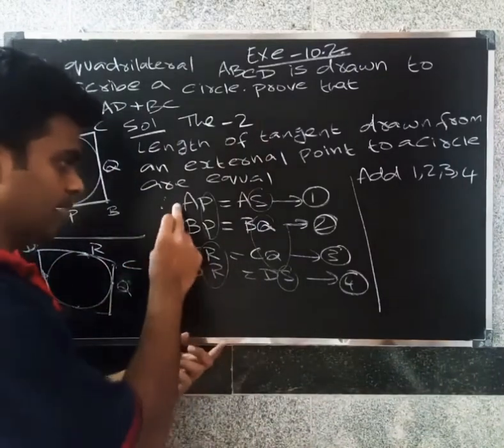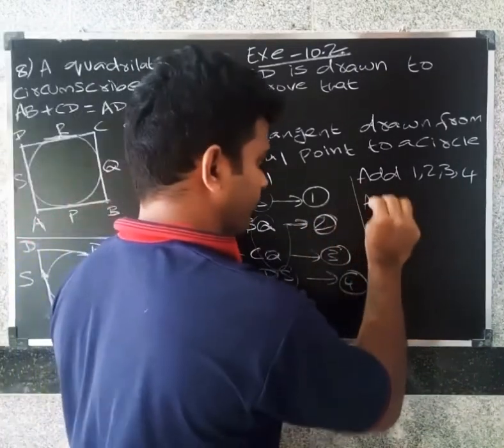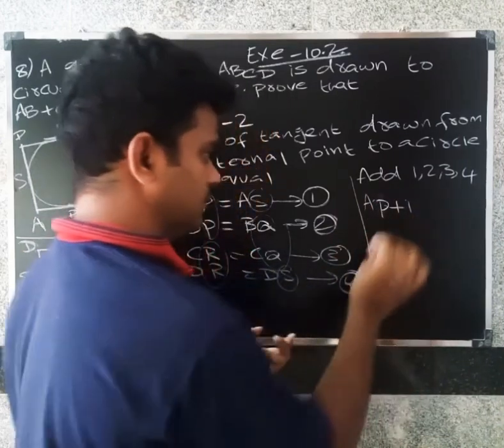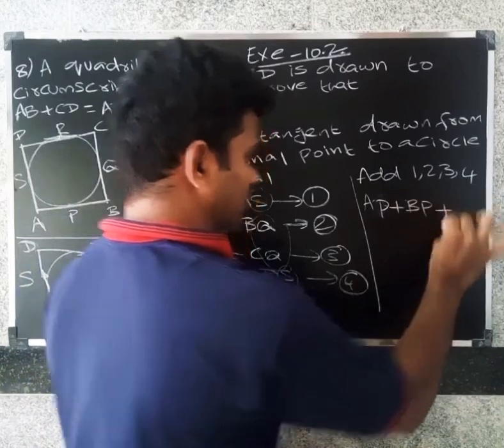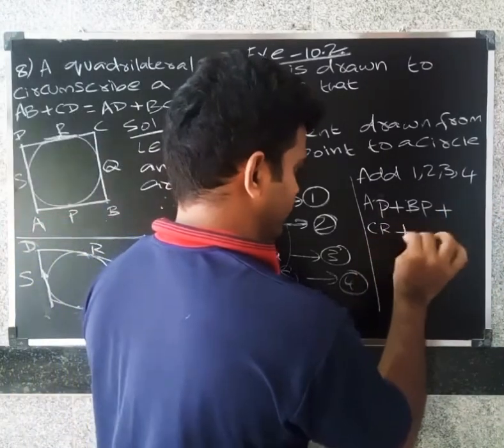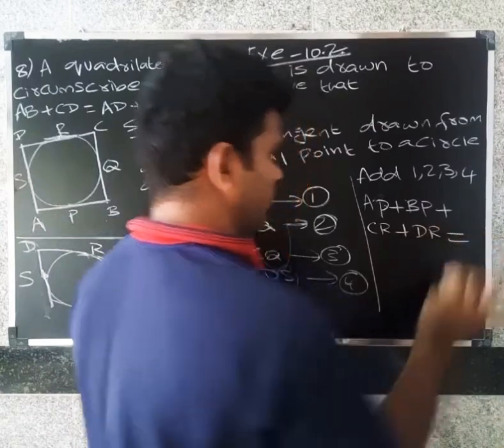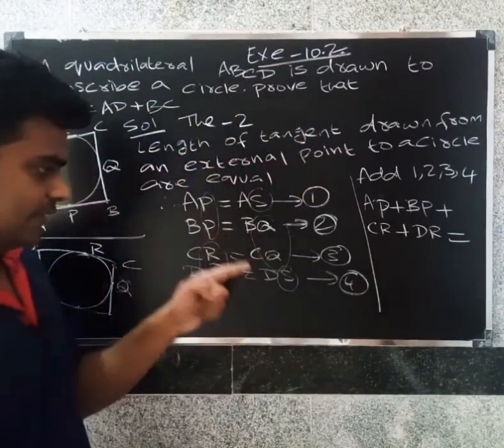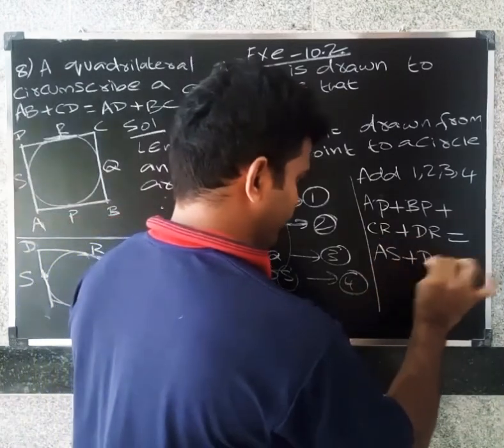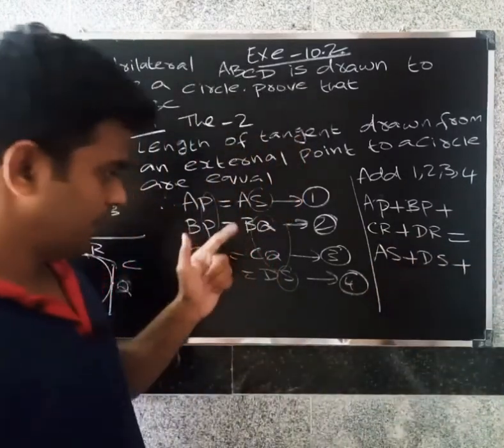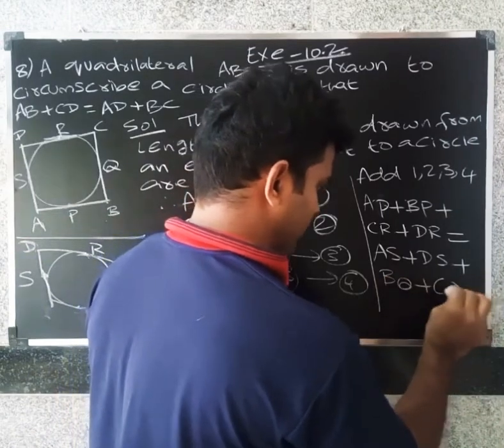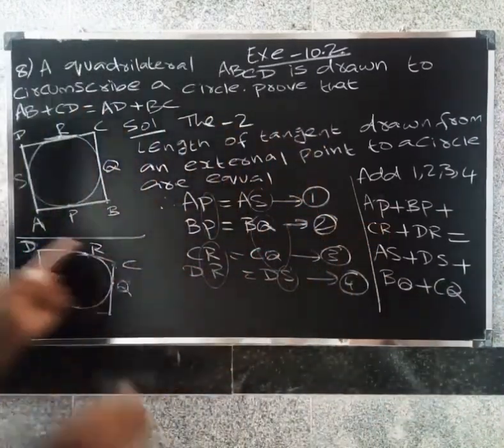AP + BP + CR + DR equals AS + BQ + CQ + DS on the right-hand side.